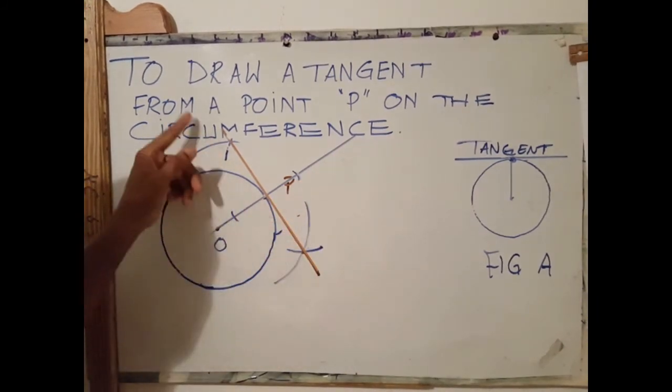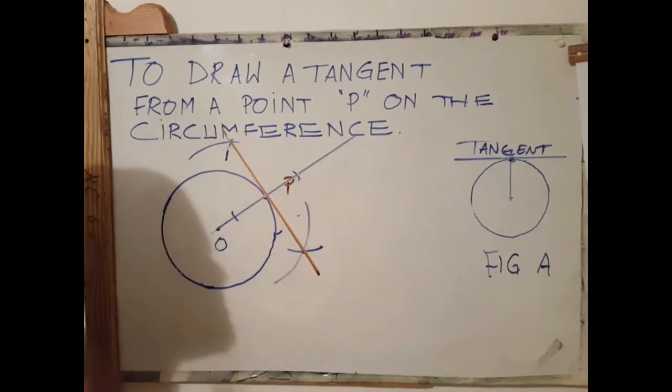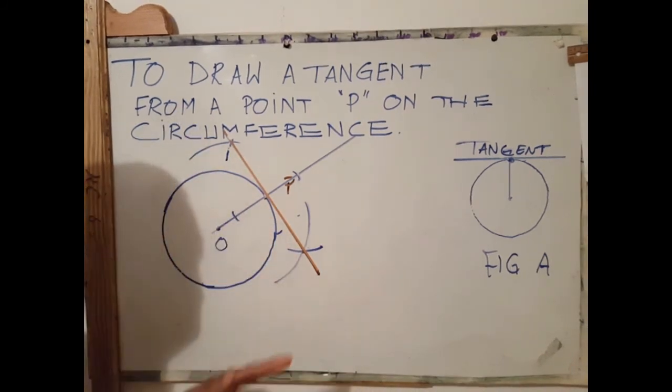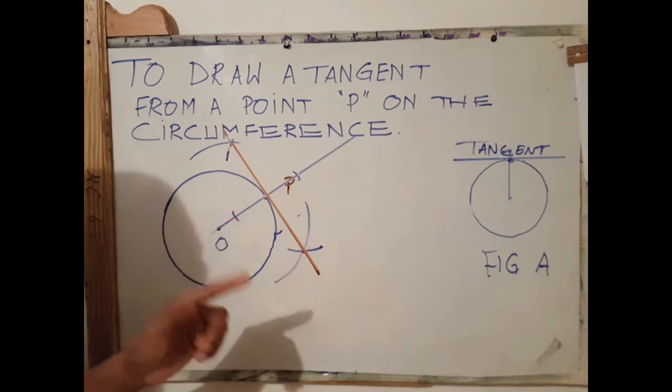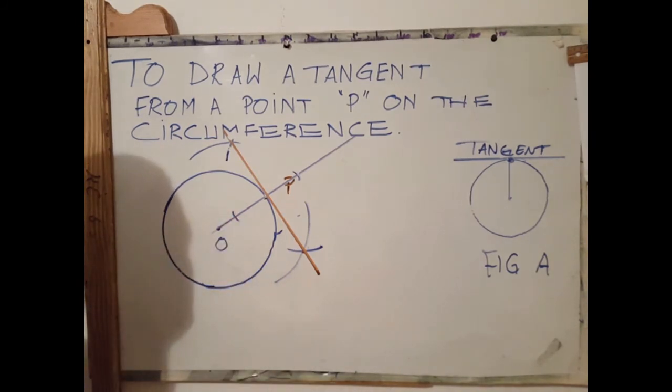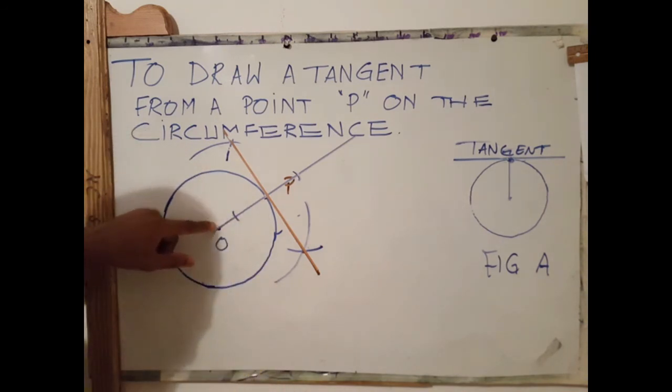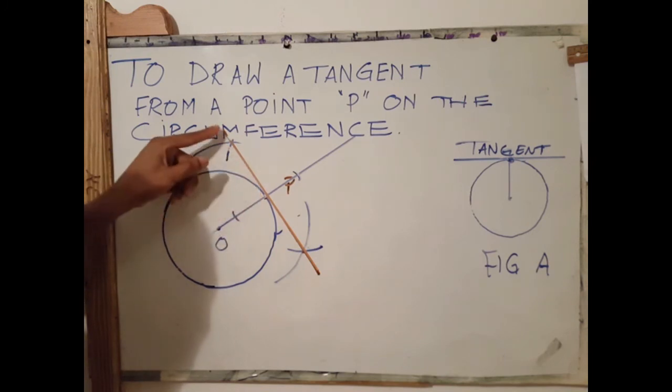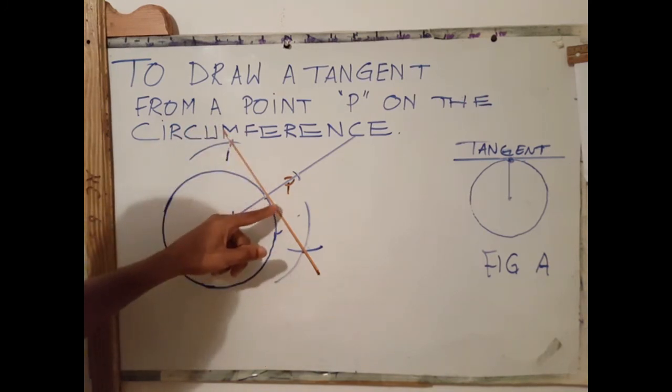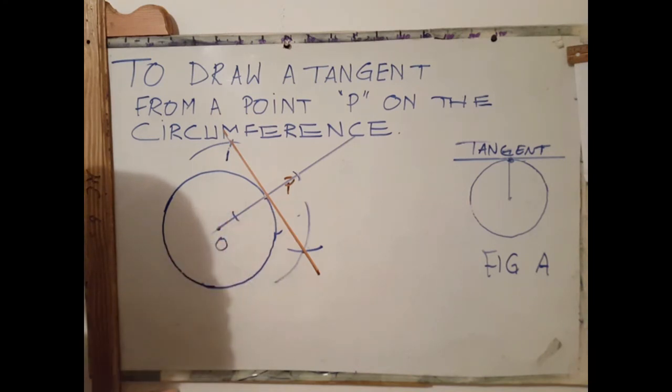That perpendicular line is the tangent. As we know, a tangent is always at right angle to the radius. And in this case the radius is from O to P, and the tangent is perpendicular to this line, which is the radius.